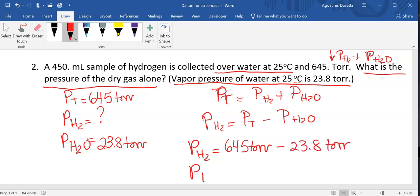So when I plug that into my calculator, I get 621.2. And since I have three sig figs, I'm going to have to round that to 621 torr.